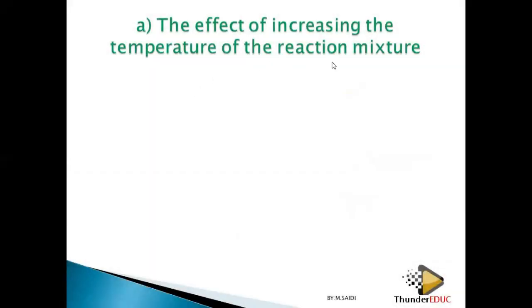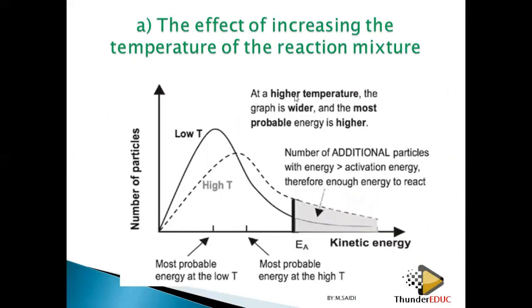We're looking at the effect of increasing temperature on a reaction. We have two graphs, graph A and graph B. Graph A shows the distribution at a higher temperature, and graph B shows it at a lower temperature. The shaded part represents the particles which have enough energy, or more than the activation energy, so that they can react.